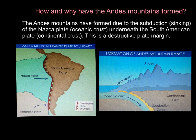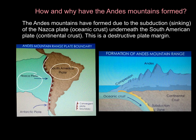So how and why have the Andes Mountains formed? The Andes Mountains are formed due to the process of subduction, which is the sinking of the Nazca plate — the oceanic crust — underneath the South American plate — the continental crust. This occurs because it's a destructive plate margin, where two plates move towards each other. The Nazca plate is oceanic, and the South American plate is continental. Where they collide, the Nazca plate, being heavier and denser, sinks or subducts underneath the South American plate, which is the lighter continental one.